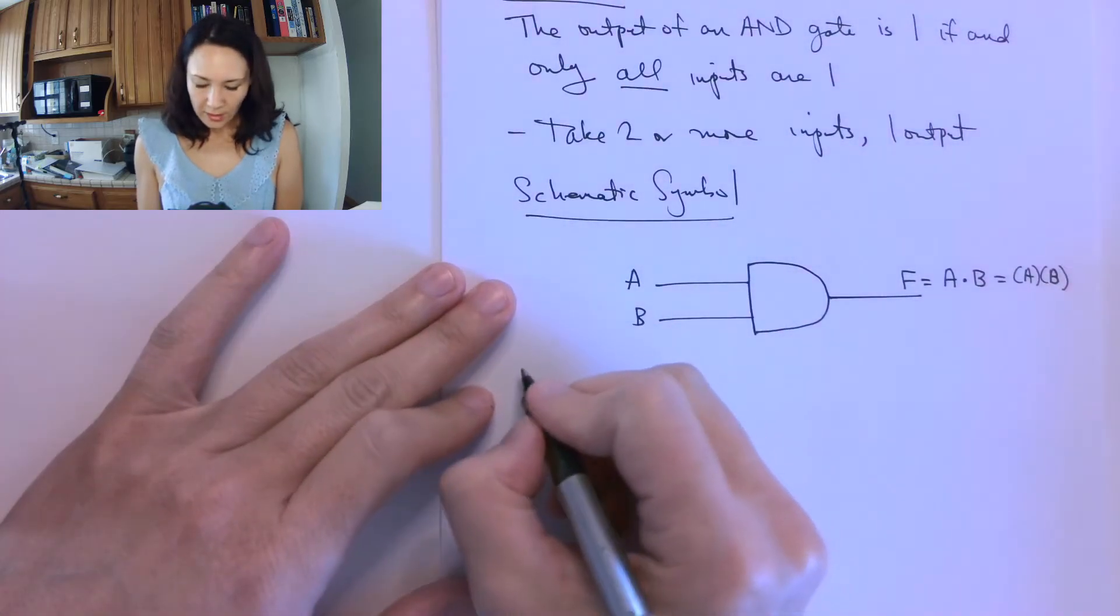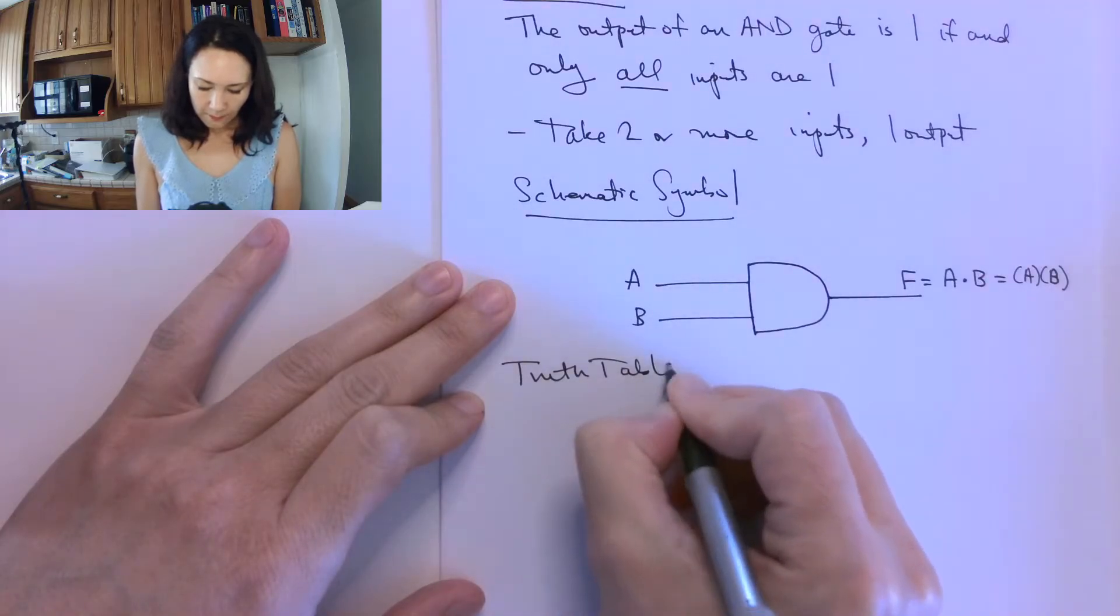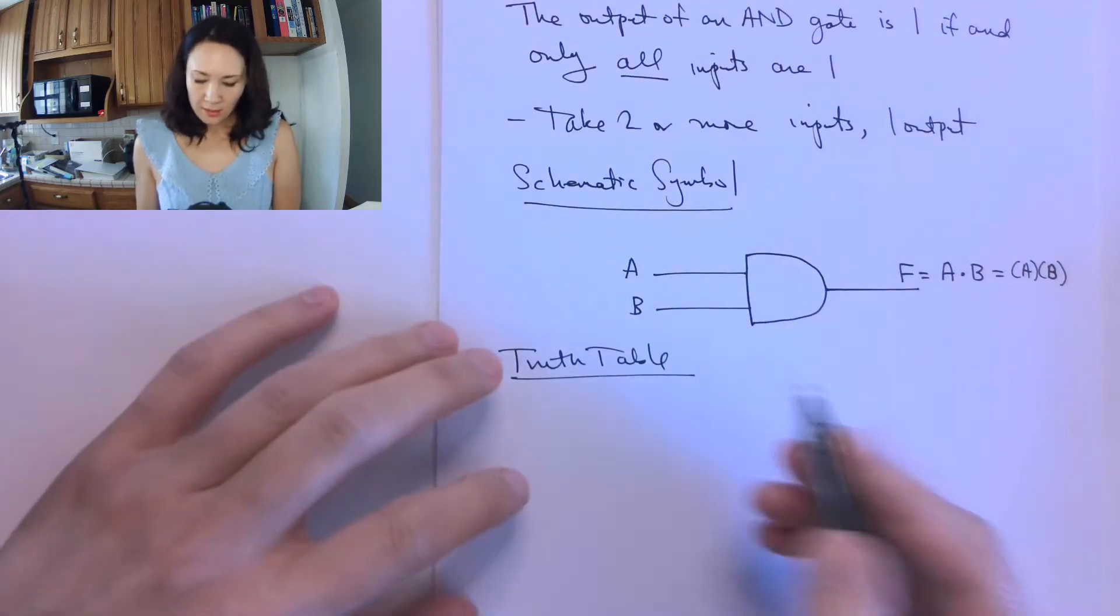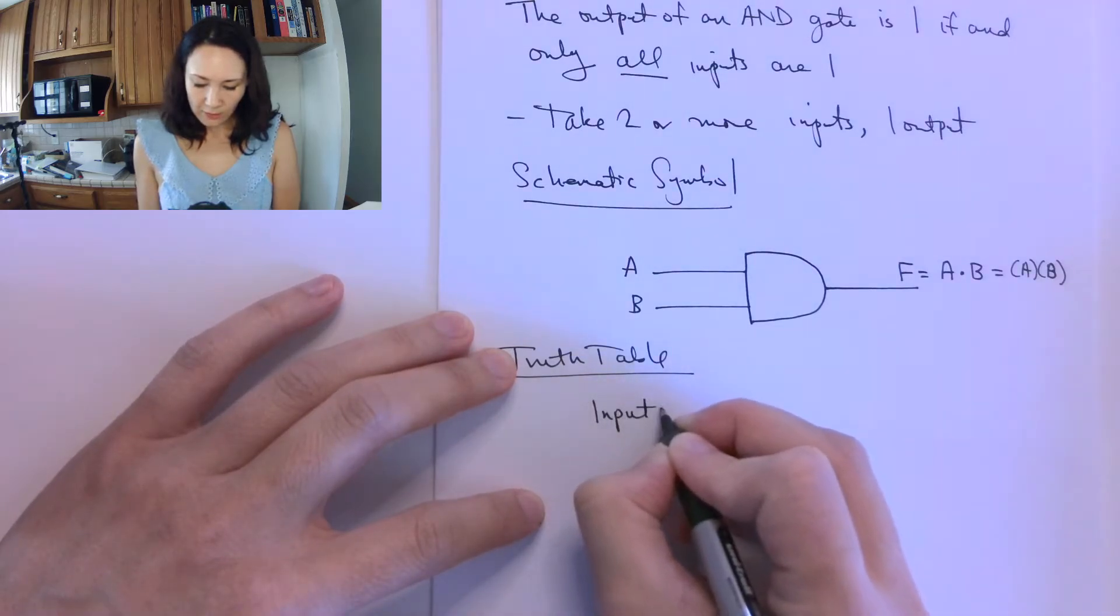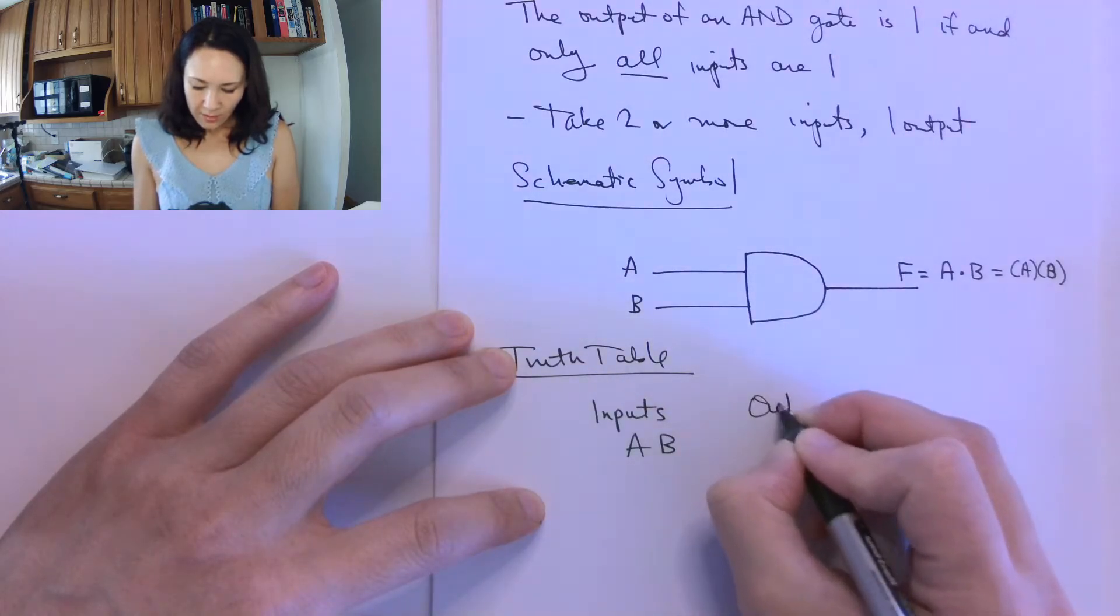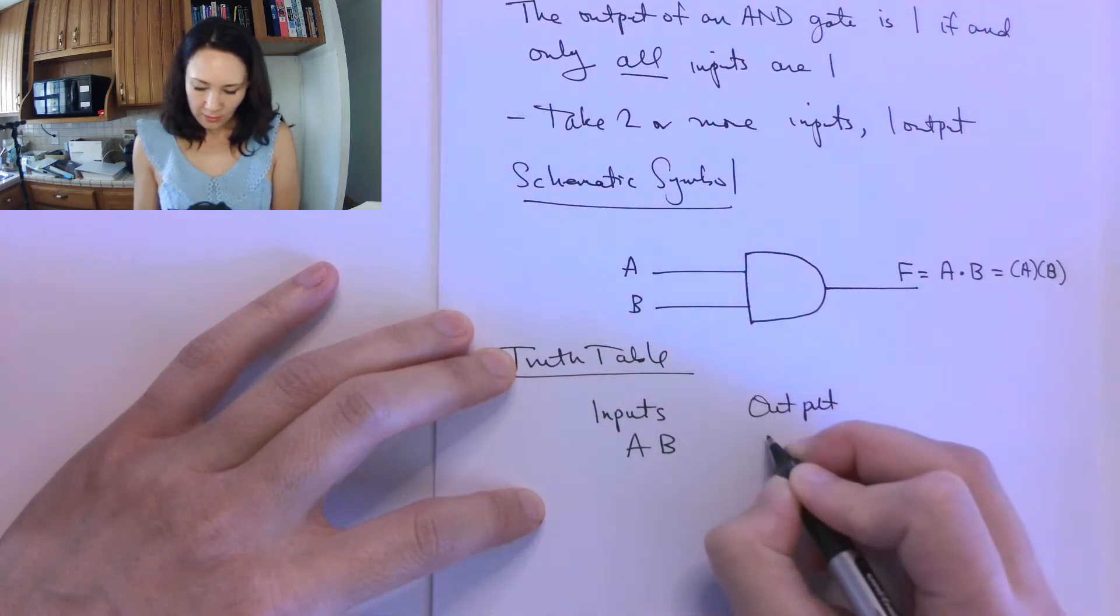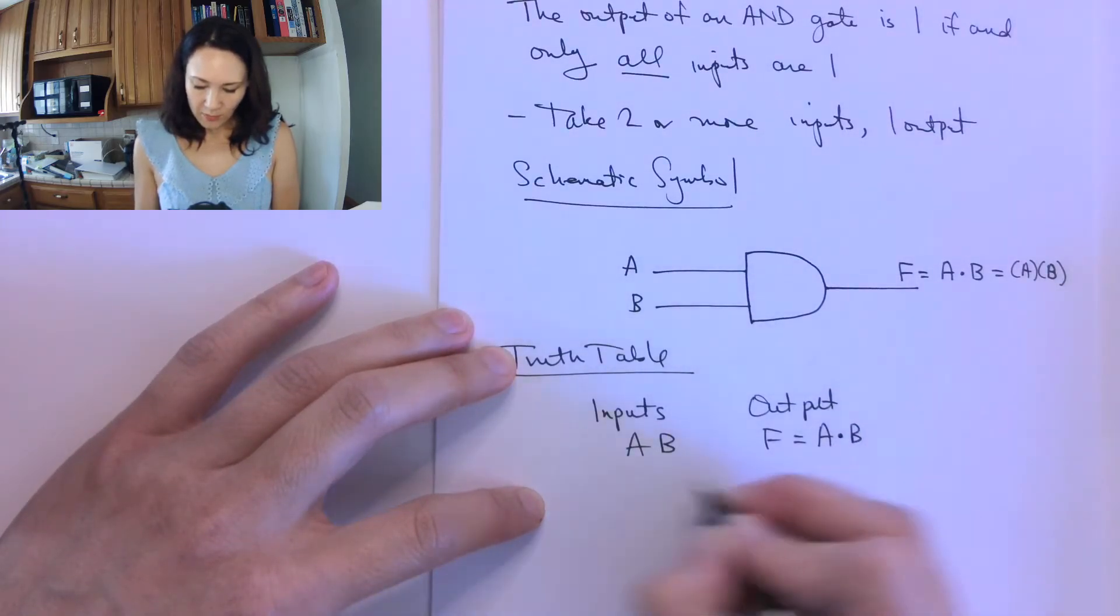We're interested in the truth table for the AND gate. So remember, the truth table has to have all combinations of inputs. So if my inputs are A and B, my output is F, and F implements the function A and B.